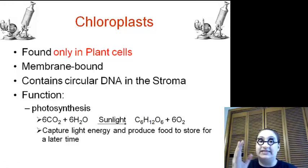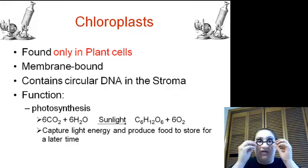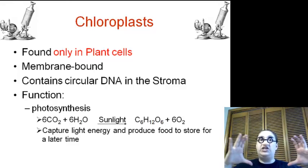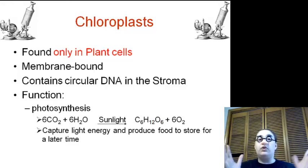Chloroplasts. Only found in plant cells, or mostly only found in plant cells. Some bacteria have them. But when we talk about plant and animals, only found in plant. They are membrane-bound, so they are an organelle. They do contain circular DNA, their own DNA found in the stroma, or the liquid portion of the chloroplast. Now, only chloroplasts and mitochondria have their own DNA. Otherwise, we talk about the cellular DNA contained in the nucleus. What do chloroplasts do? They are using photosynthesis to actually create energy, and then to create sugar, or food, for the cells.